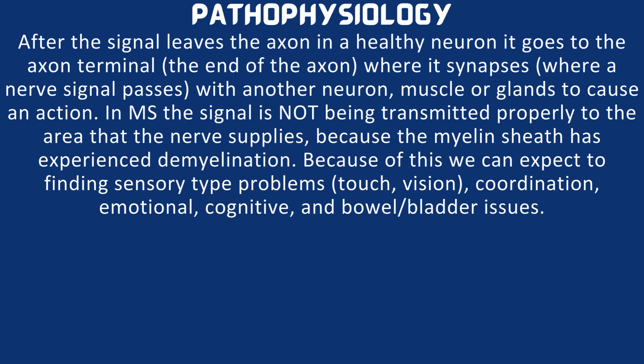After the signal leaves the axon in a healthy neuron, it goes to the axon terminal where it synapses with another neuron, muscle, or gland to cause an action. In multiple sclerosis, the signal is not being transmitted properly because the myelin sheath has experienced demyelination. Because of this, we can expect to find sensory type problems such as touch and vision. The patient may also have coordination, emotional, cognitive, and bowel and bladder issues.